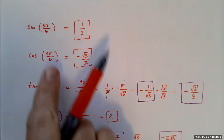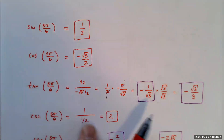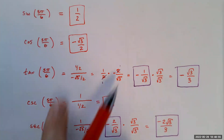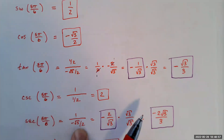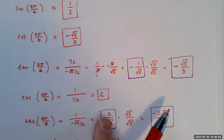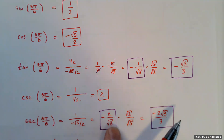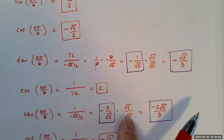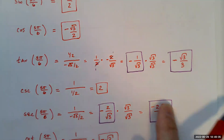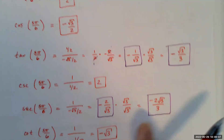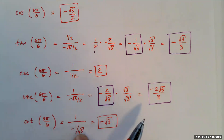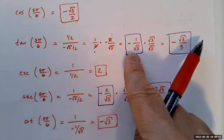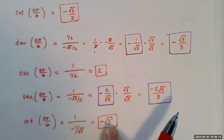Cosecant is the reciprocal of sine, so 1 divided by 1/2 is 2. Secant is the reciprocal of cosine — the reciprocal of negative √3/2 is negative 2/√3, or rationalized: negative 2√3/3. Cotangent is the reciprocal of tangent — the reciprocal of negative 1/√3 is negative √3.